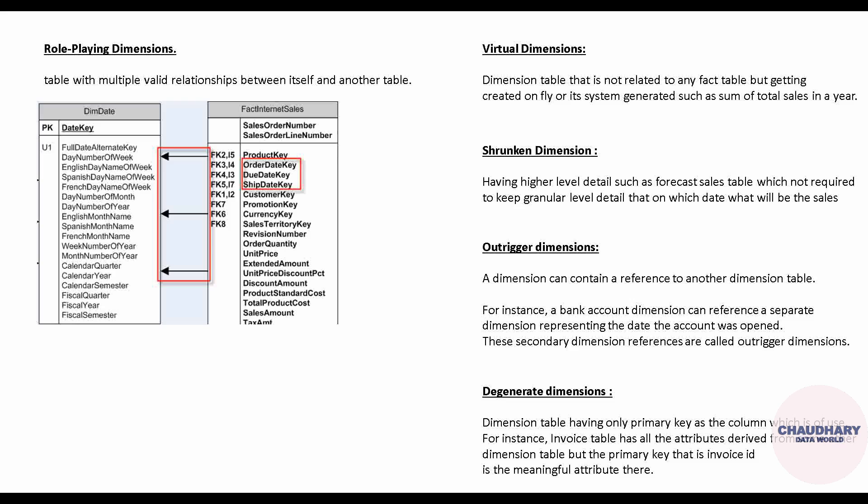Another one is the outrigger dimension: a dimension that contains a reference to another dimension table. For example, a bank account dimension can reference a separate dimension representing the date the account was opened. These secondary dimension references are called outrigger dimensions — meaning the dimension table also needs other dimensions to extract that additional information.